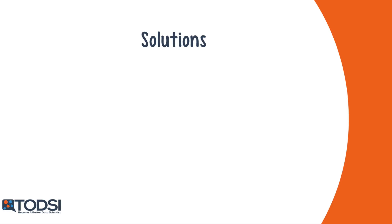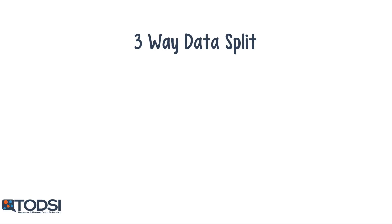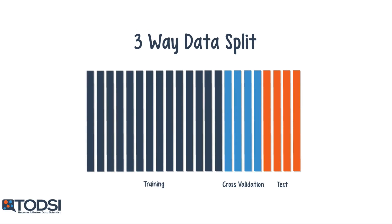Overfitting is a very common problem across many different data science methods. One popular way to prevent overfitting is by splitting up the data into three sets: the training set, test set, and cross-validation set. Along with parameter averaging, this method ensures that the model is not too dependent on any particular subset of the overall data set.